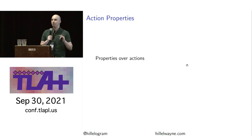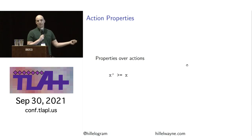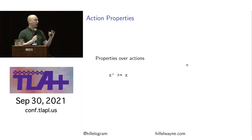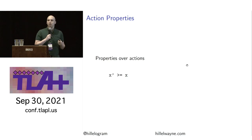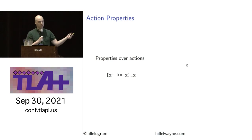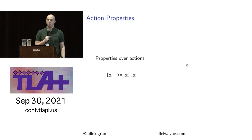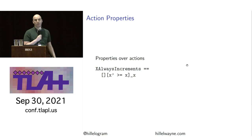Action properties are essentially actions on transitions in the state space. Consider the statement x' >= x — this is an action saying that in the next state the new value of x will be at least as large as x. If I wrap this in the standard TLA+ syntax, this says either x' >= x is true or x is unchanged — a stutter step. If I add the 'always' symbol, I'm saying it is always the case that this action is true or x is unchanged. I can put this in an operator called 'x always increments' and check this in TLC under the temporal properties box.